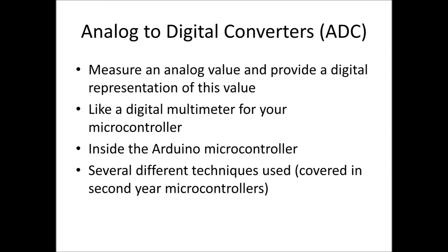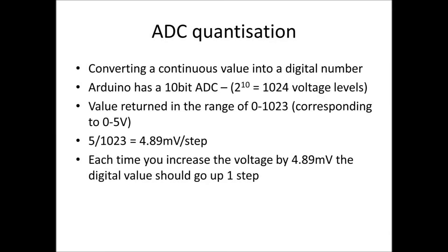It's a bit like a digital multimeter, which will tell you the voltage — maybe 3.12 volts. But it's inside your microcontroller. In our Arduinos, we have these internal ADCs, set up so that we can measure four different signals. There are lots of different techniques at the hardware level; we cover these in detail in a second year microcontroller subject. Essentially, ADCs perform something called quantization — converting a continuous number into a discrete digital number. Our Arduinos have a 10-bit analog to digital converter, which means 2 to the power of 10 gives us 1024 different voltage levels.